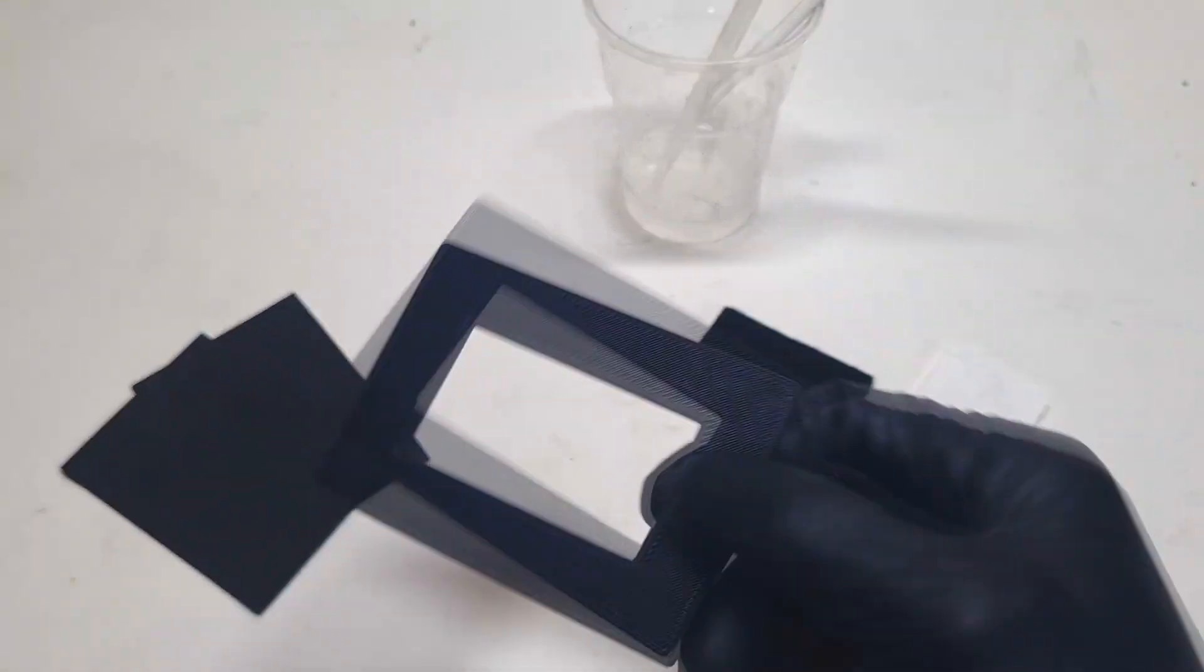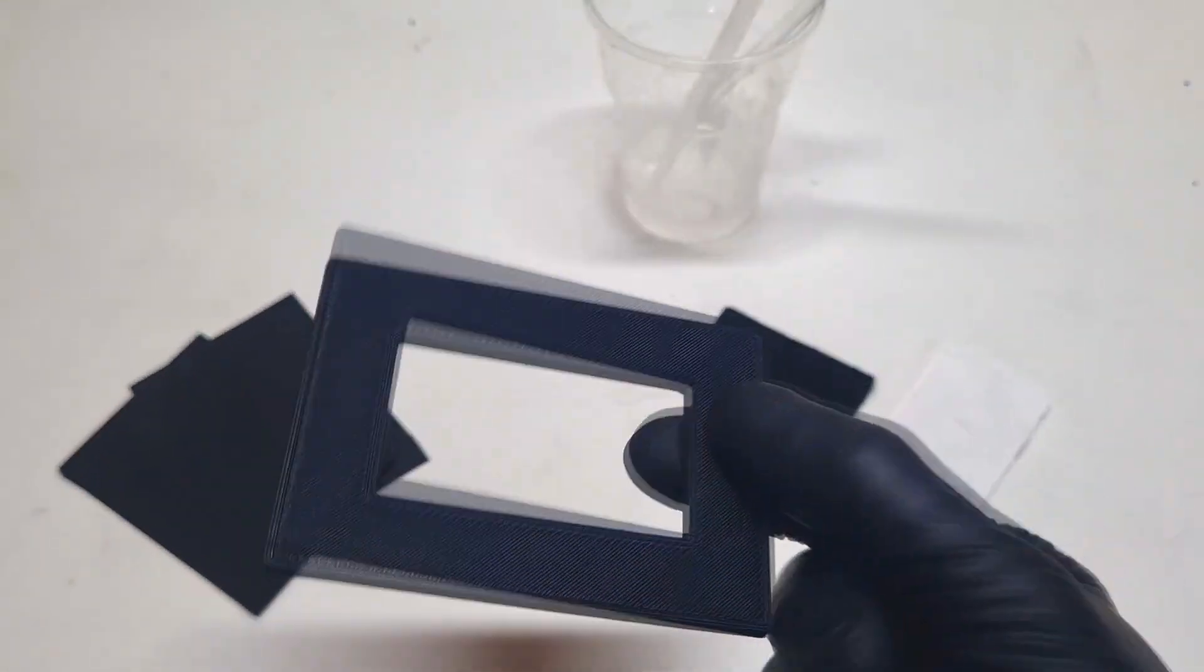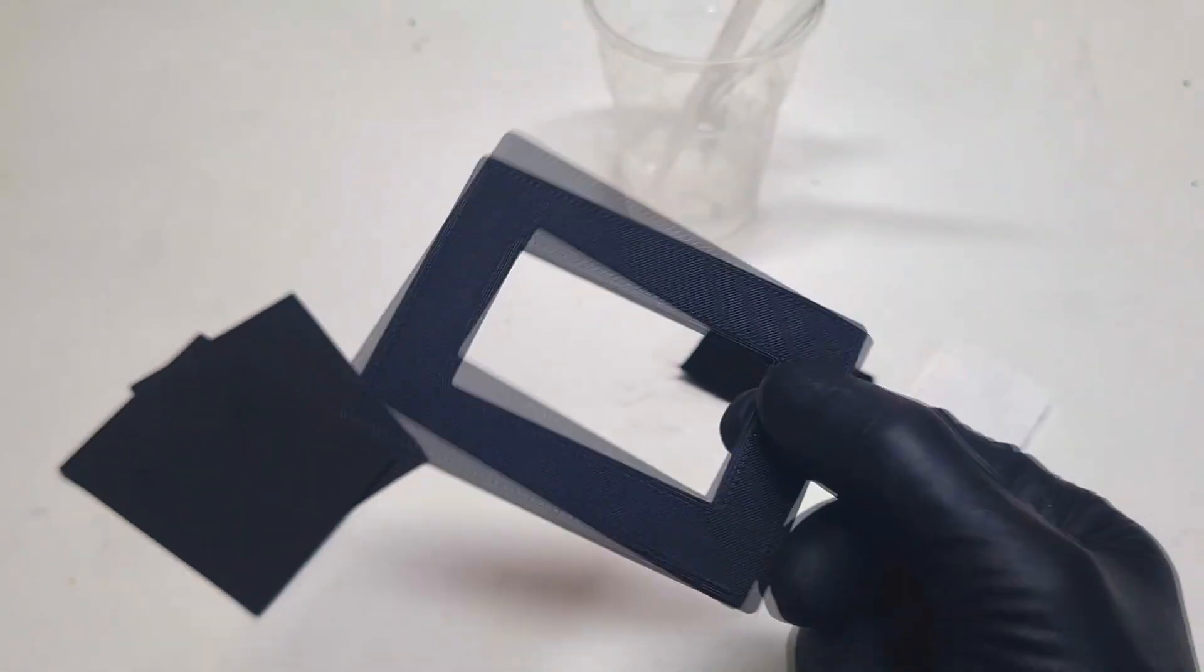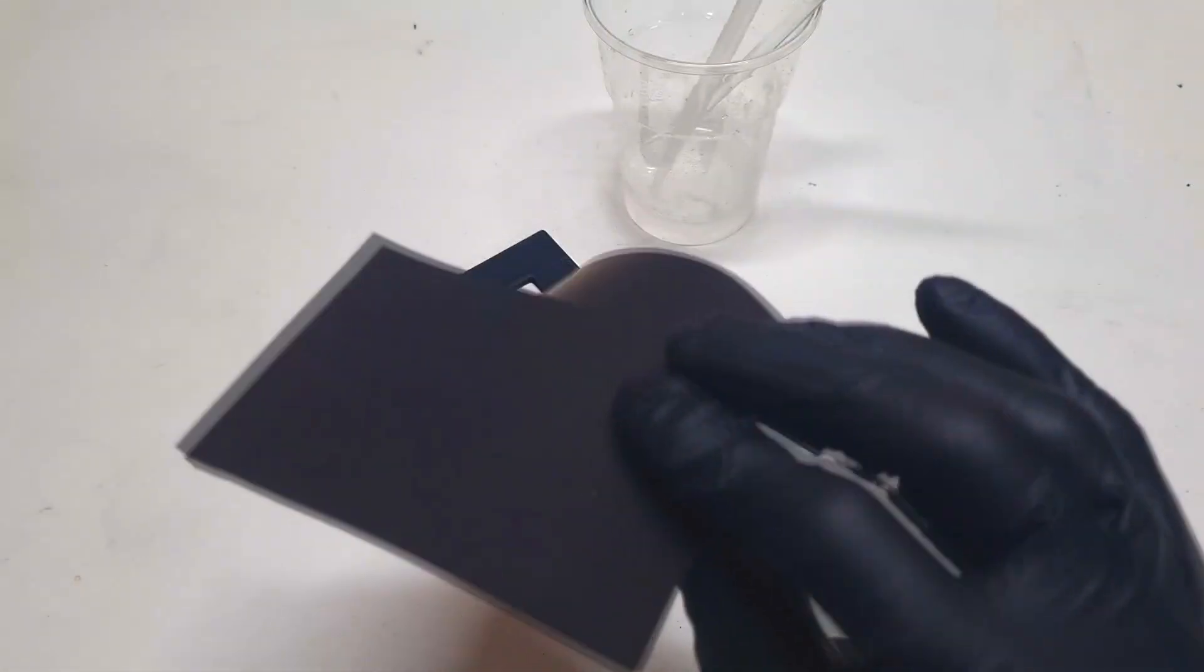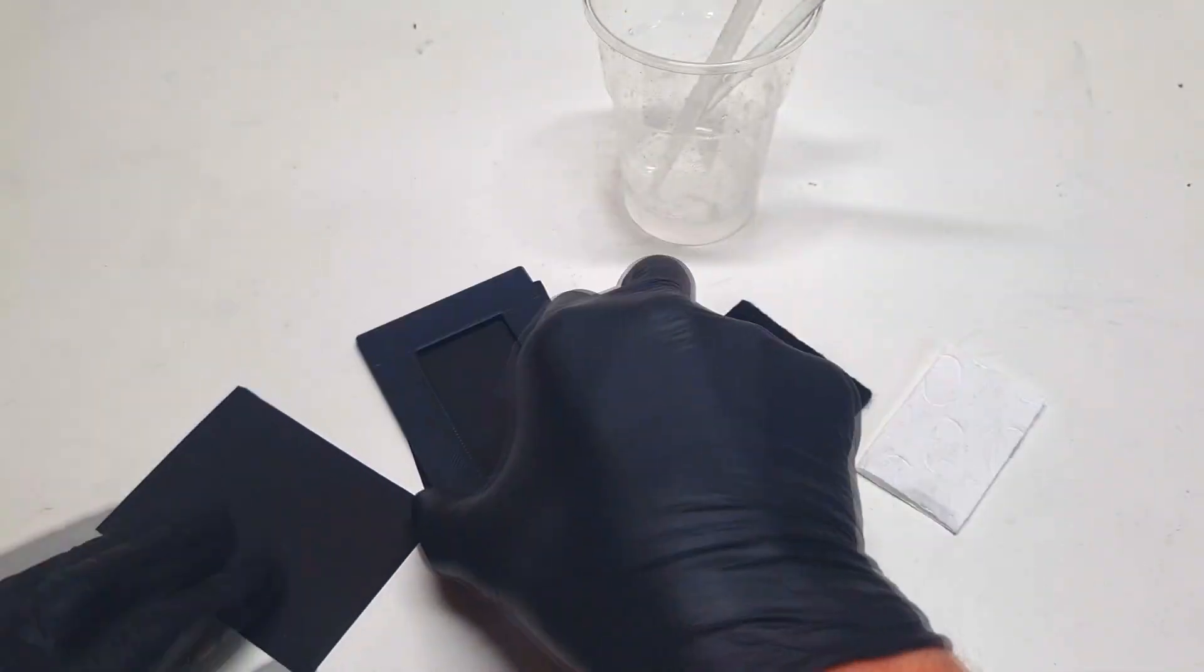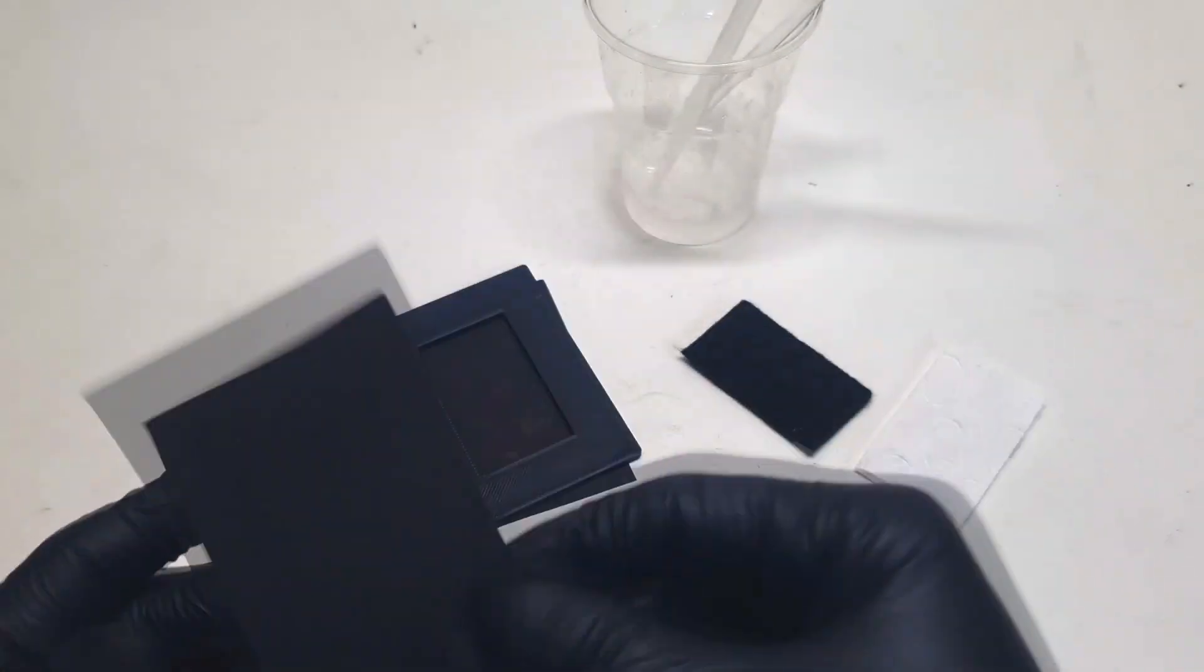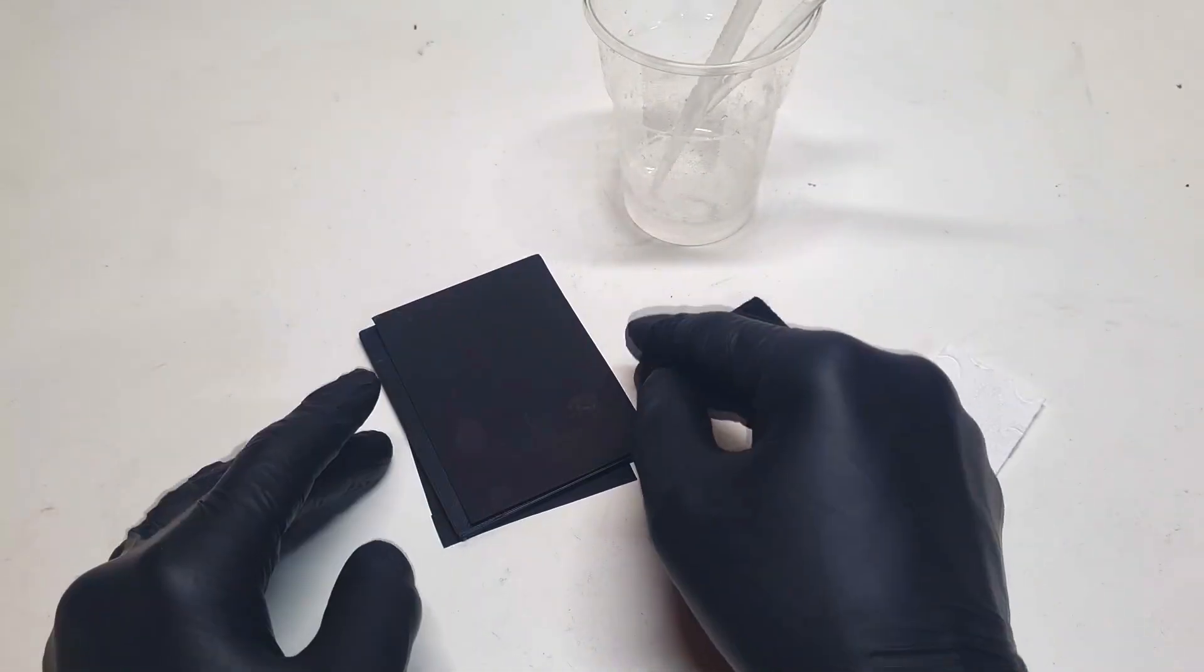And for this reason here I have some 3D printed housing or the frame of the cell, 2 pieces of conductive HDPE. One will go on the negative side of the cell and another will go on the positive side of the cell.